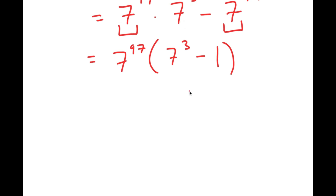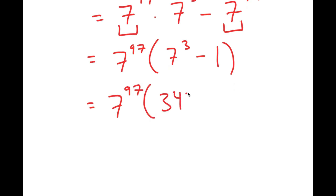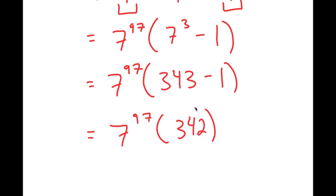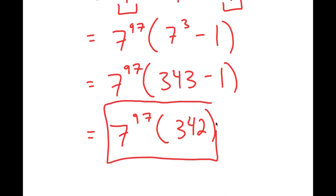7 to the power of 3 minus 1 — well, 7 to the power of 3 is 343, so I get 343 minus 1, which is equal to 342. So I get 7 to the power of 97 times 342. This is my answer in simplest form.